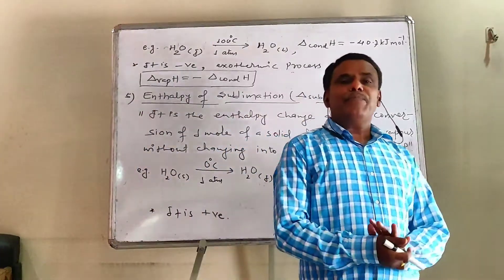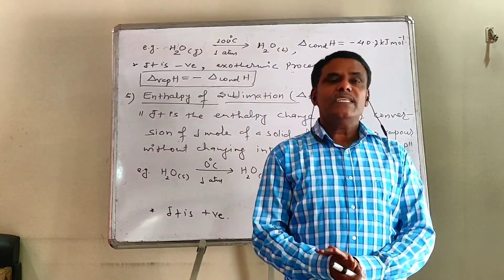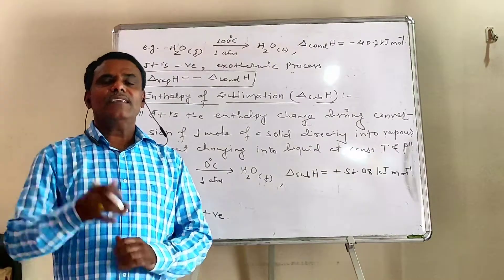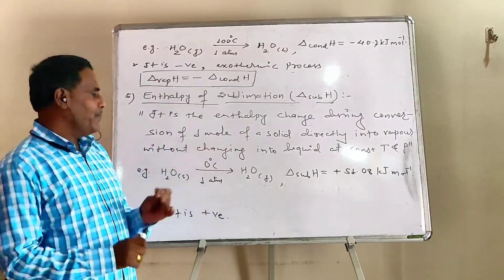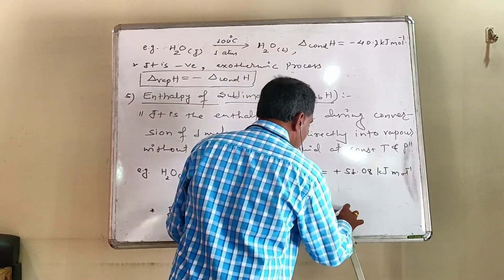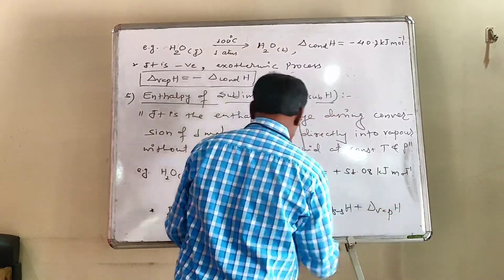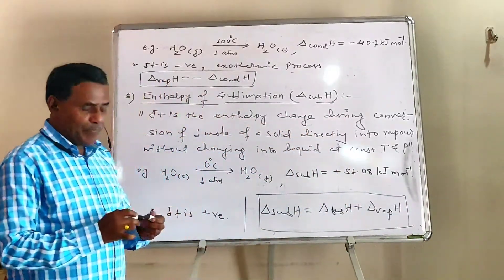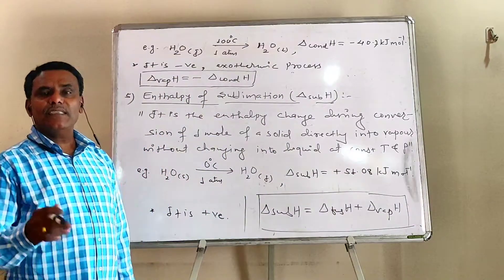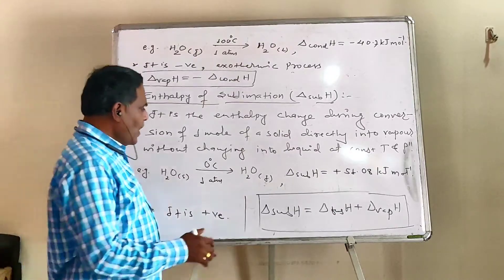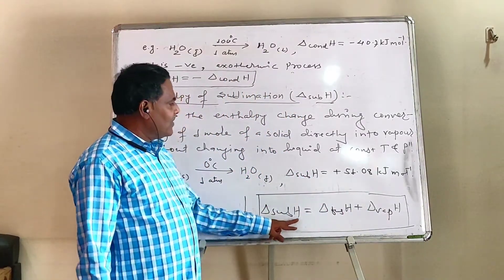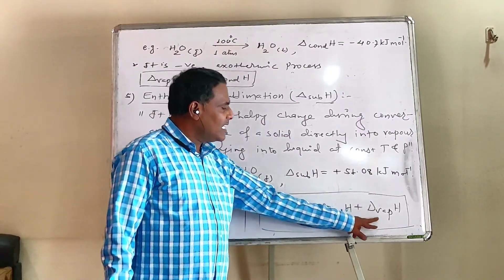Enthalpy change is a state function — it depends only upon the initial and final states, not upon the path followed. And hence, delta sublimation H equals delta fusion H plus delta vaporization H. Enthalpy of sublimation is the sum of enthalpy of fusion and enthalpy of vaporization, because sublimation involves melting (fusion) and vaporization.